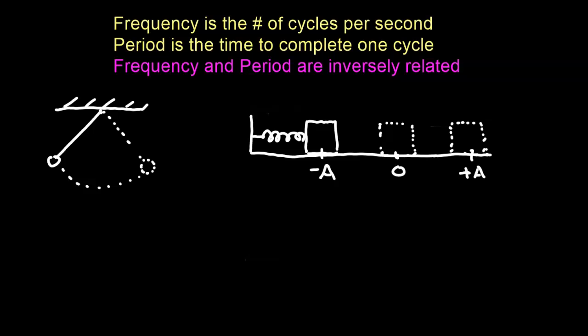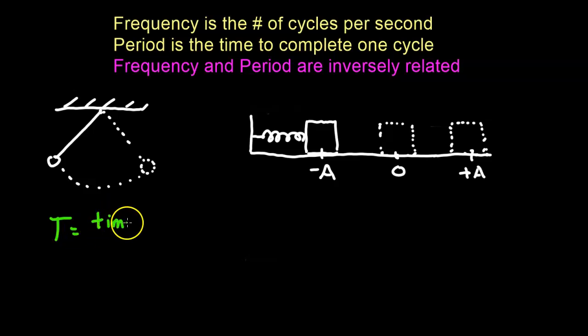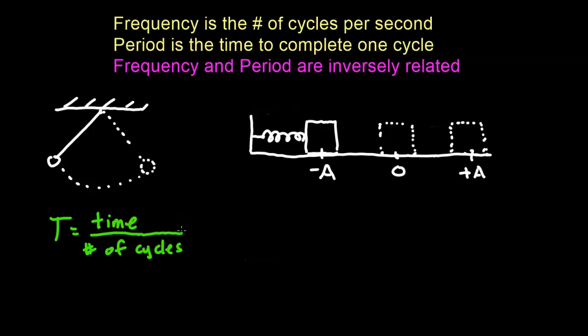Next, we're going to talk about two quantities we can measure when looking at simple harmonic motion. For a pendulum swinging back and forth, we can measure the time it takes to make one complete swing. Similarly, a mass on a horizontal spring moves back and forth, and the time for one complete cycle is called the period. To calculate the period experimentally, we measure the total time divided by the number of cycles.